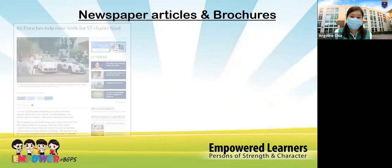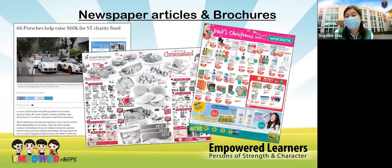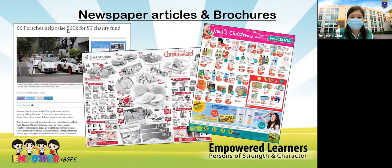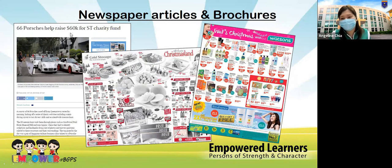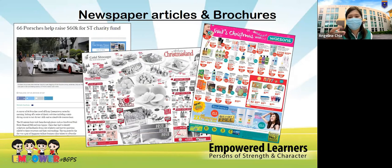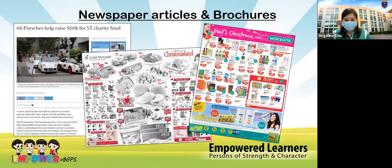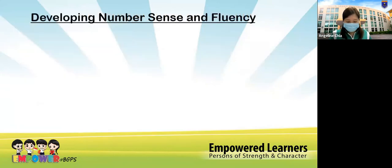Newspapers and brochures are great talking points to develop number sense and numeracy. Even for older children — a Primary 4 or 5 student might not know what '60K' means. Use these media to talk about how things they learn in class are represented in the world around them.